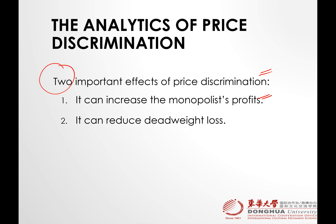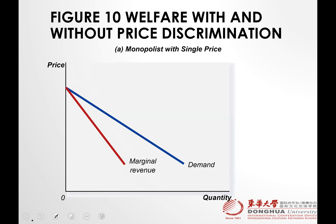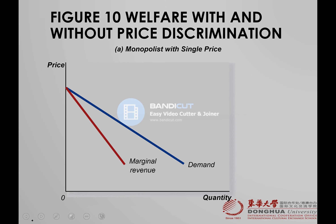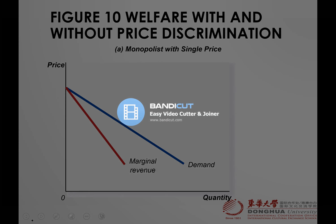A perfect price discrimination refers to a situation when the monopolist knows exactly the willingness to pay of each customer and can charge each customer a different price. There are two important effects of price discrimination: number one, it increases the monopolist's profit; and number two, it reduces the deadweight loss. For the company they are happy, and for the government they are happy too.